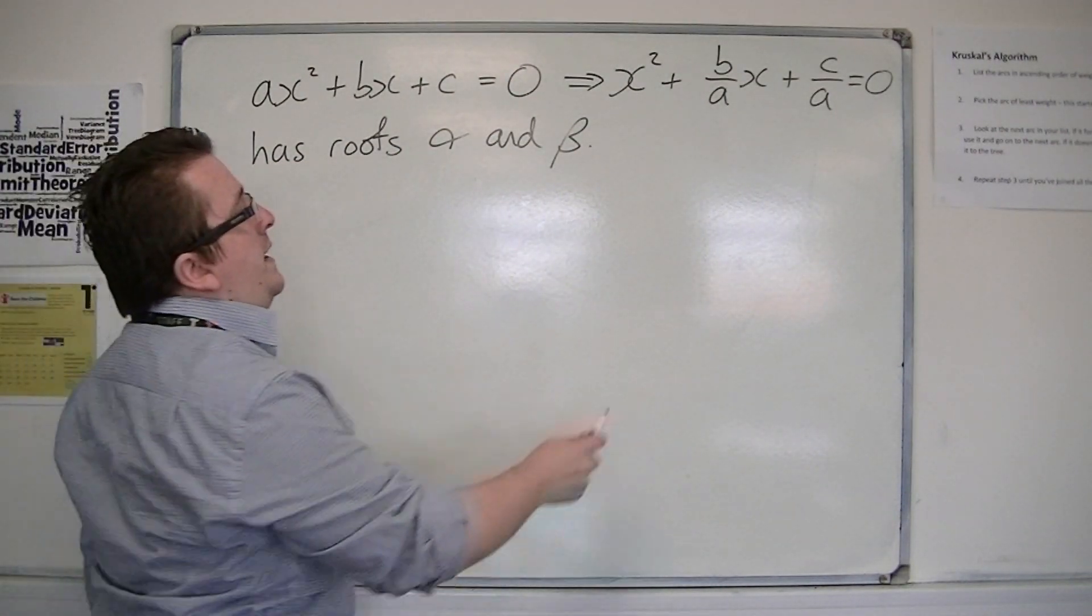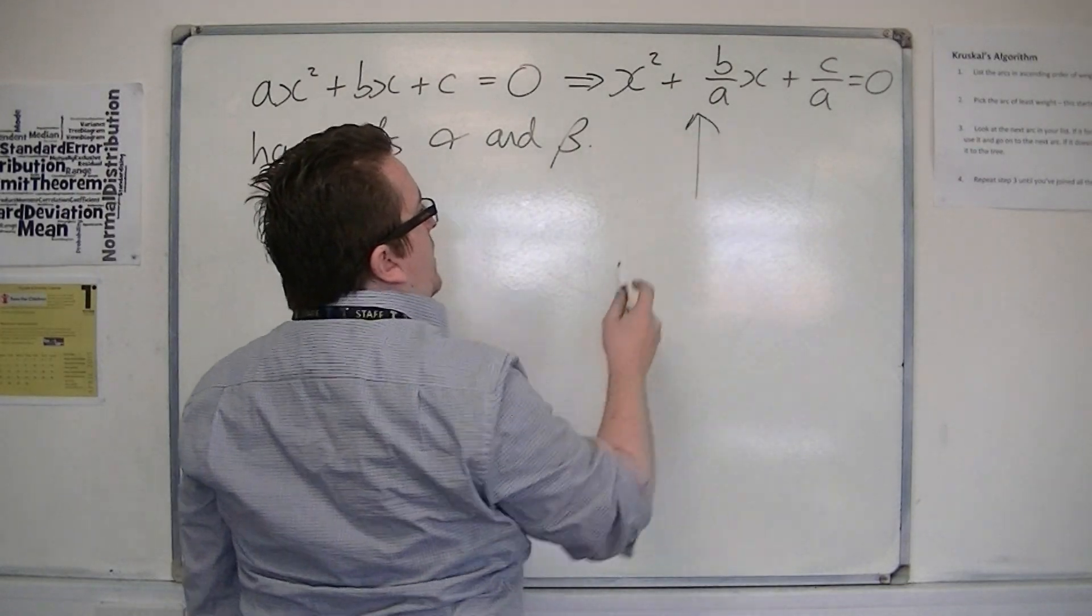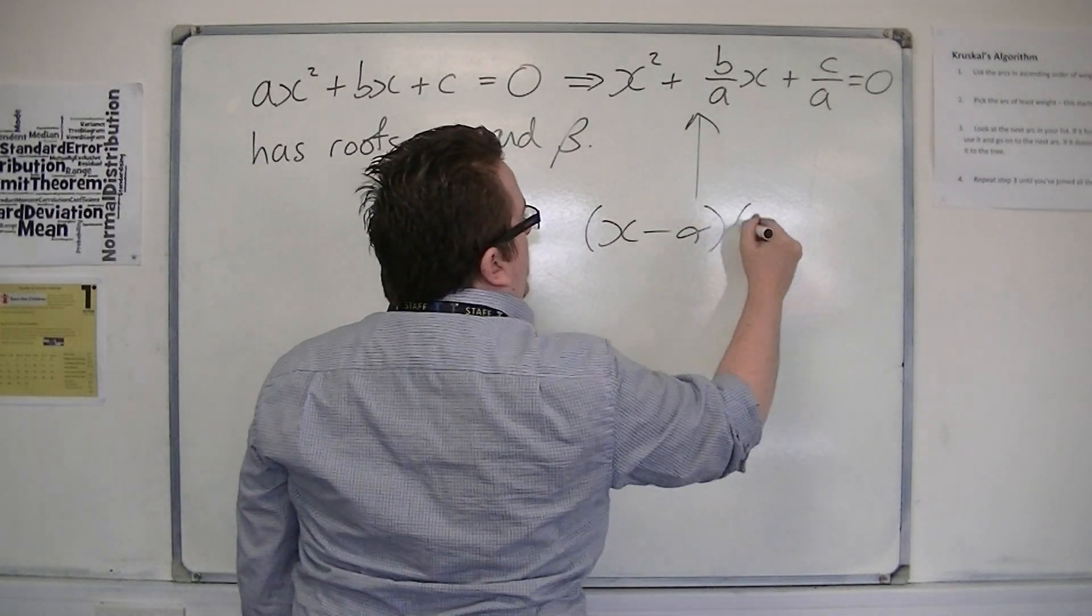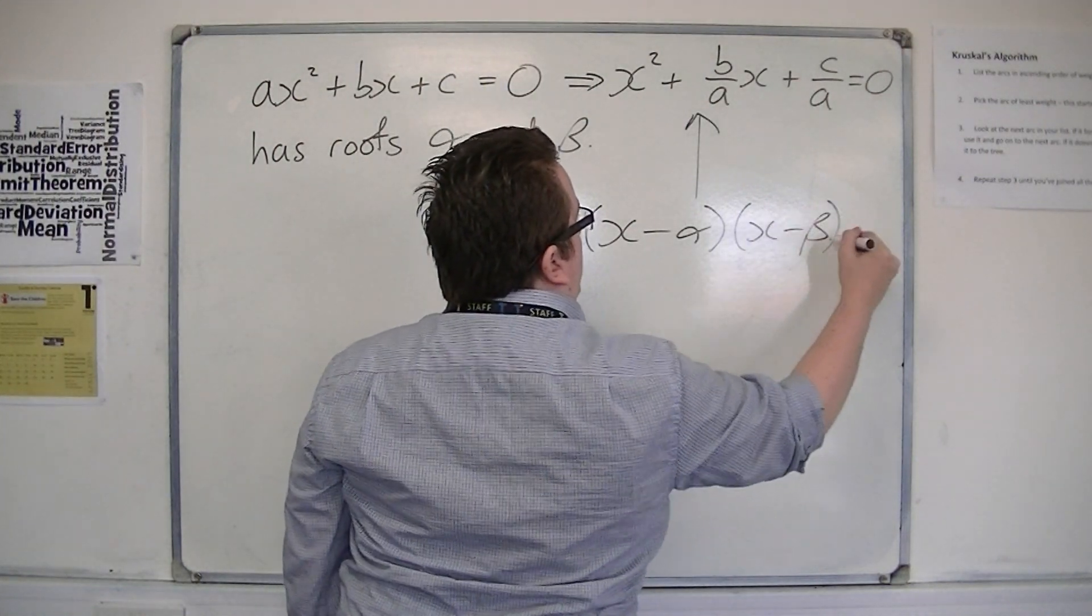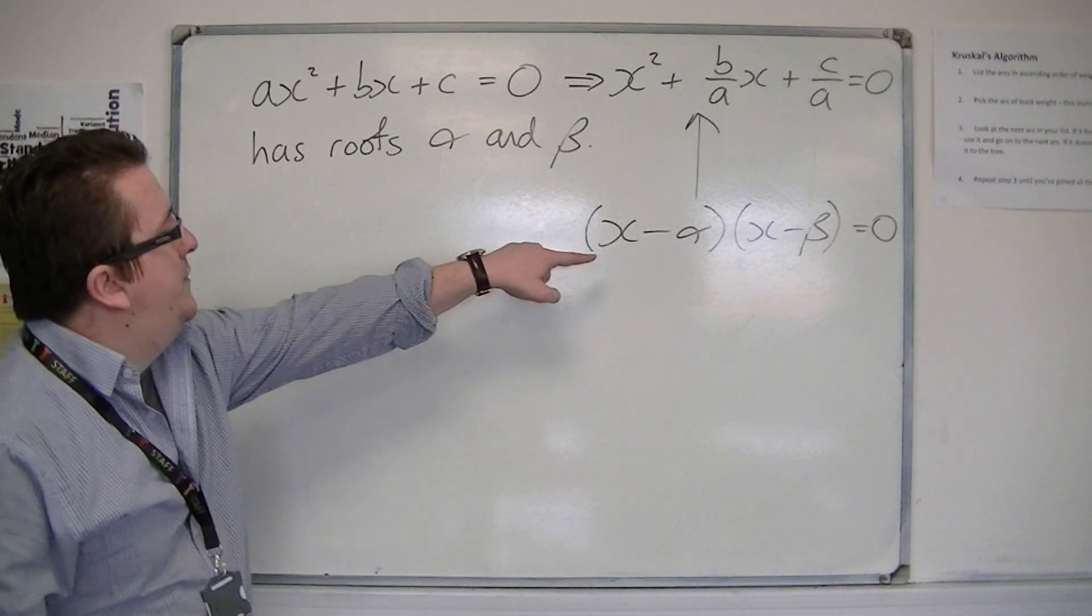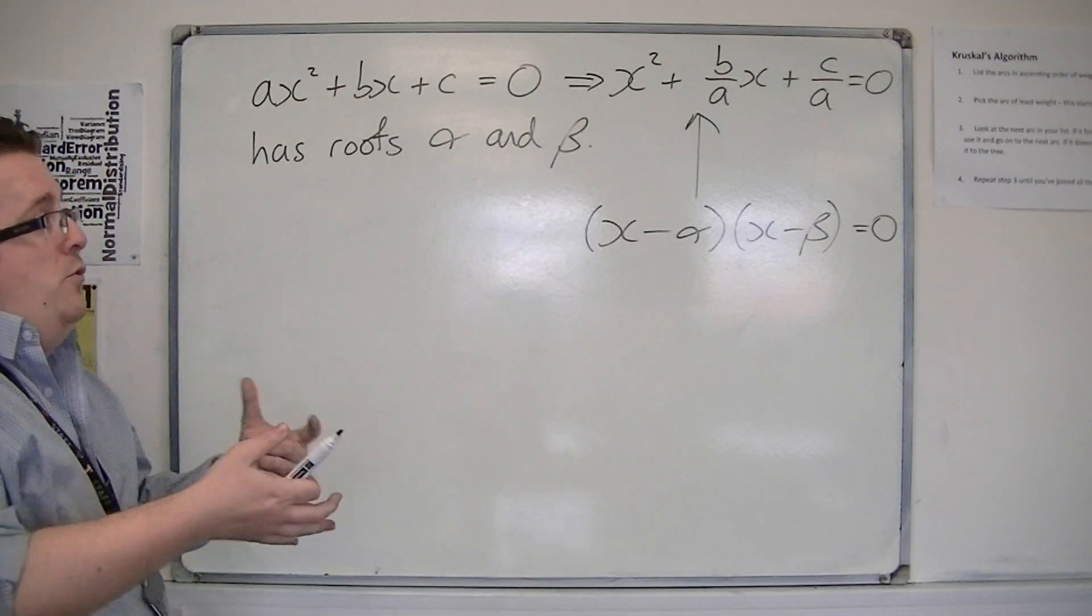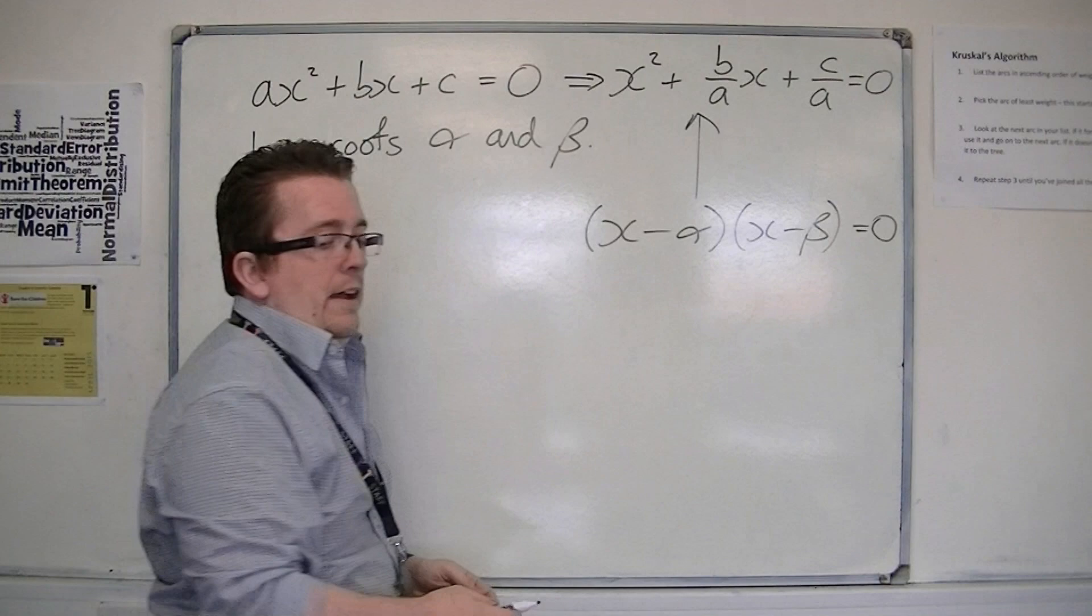So, what we're saying is that this equation can be factorized into (x - α)(x - β) = 0. This is what it means for this equation to have the roots α and β, so that it can be factorized into that form.